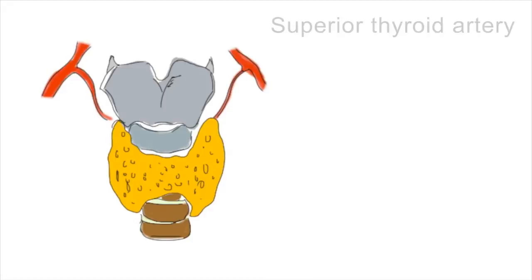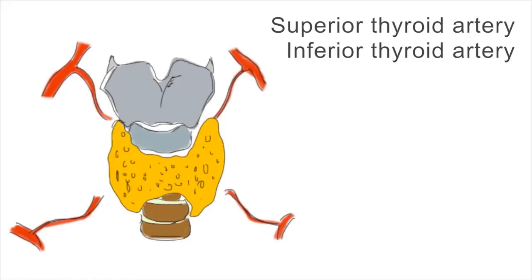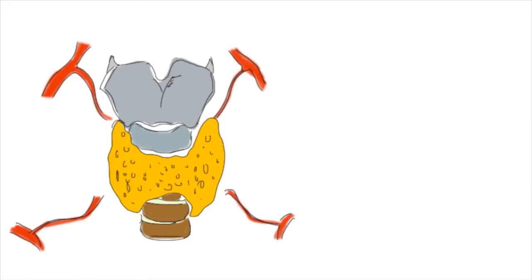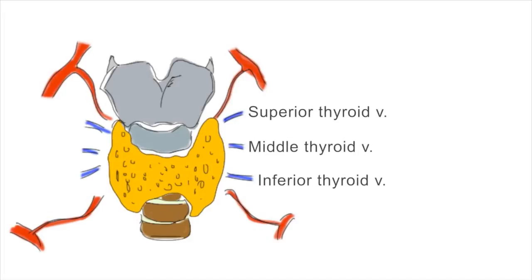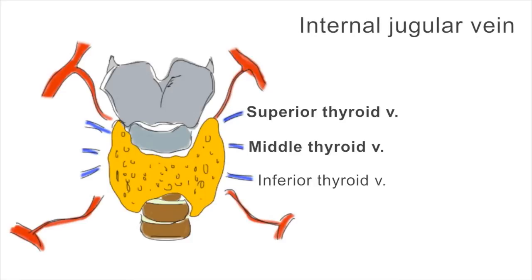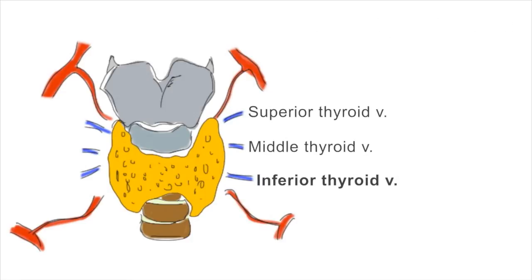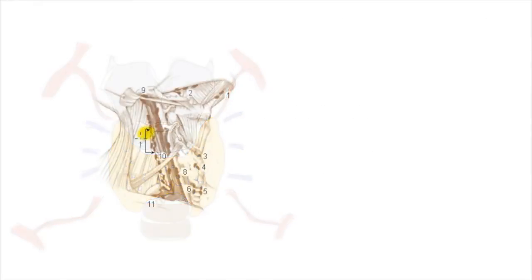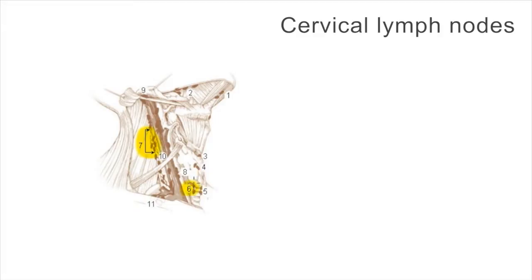The blood supply comes from the superior thyroid artery, which is a branch of the external carotid artery, and the inferior thyroid artery, which is a branch from the thyrocervical trunk. The venous drainage occurs via the superior, middle and inferior thyroid veins. The superior and middle thyroid veins drain into the internal jugular veins. The inferior thyroid veins drain into the brachiocephalic veins. Lymphatic drainage passes to the lateral deep cervical lymph nodes and the pre- and paratracheal lymph nodes.